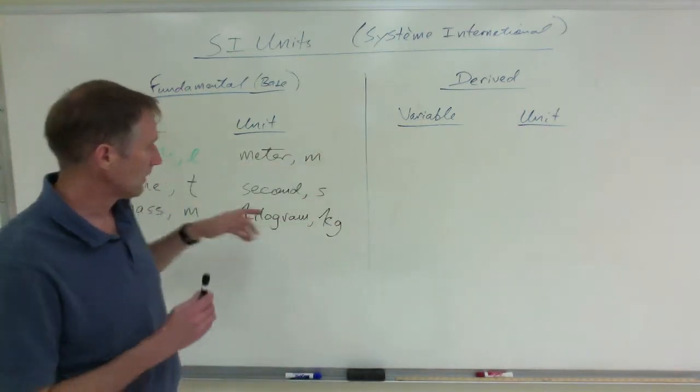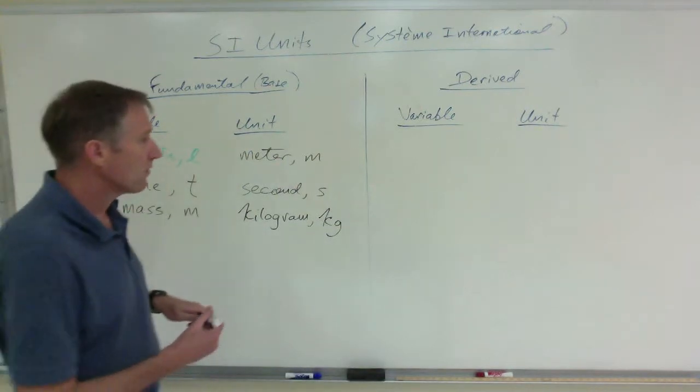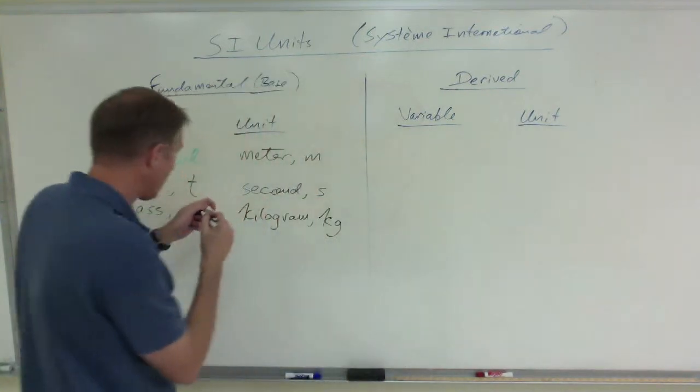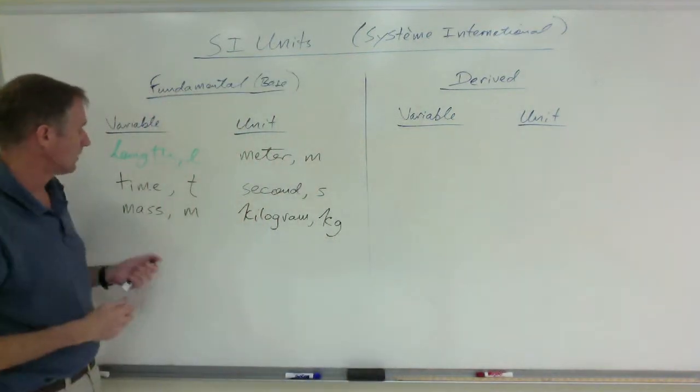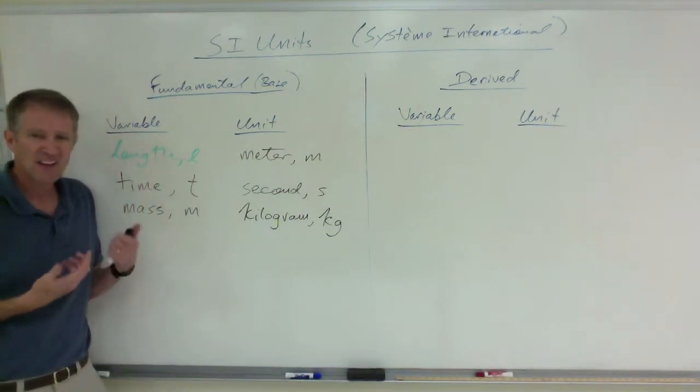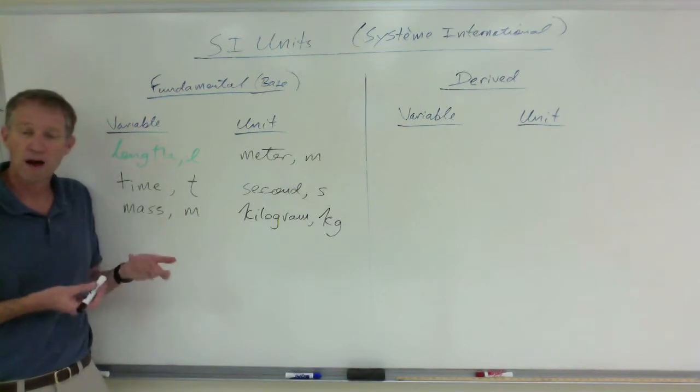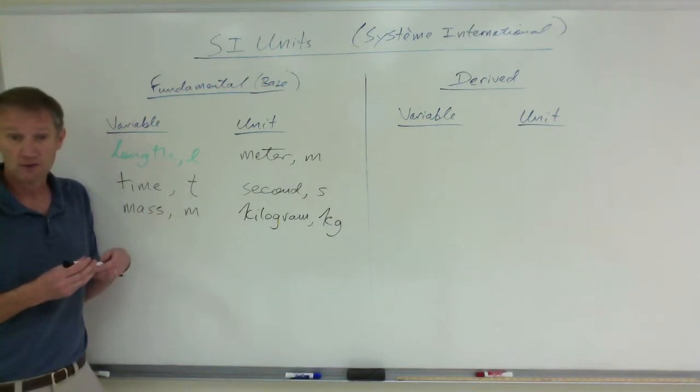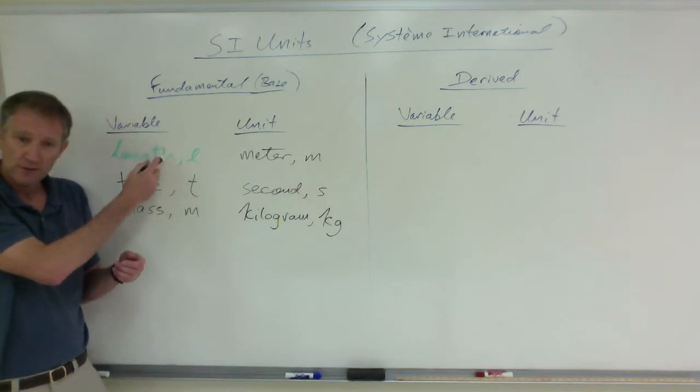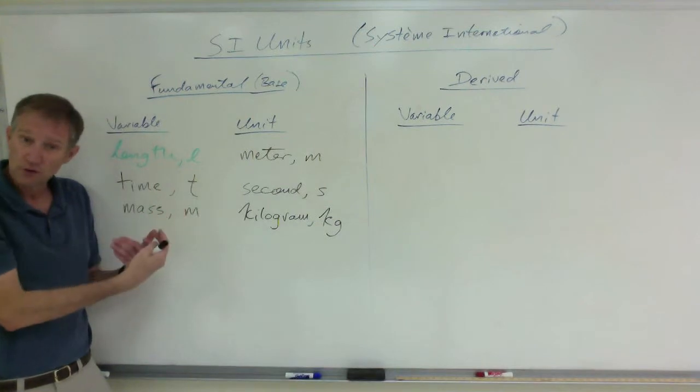Now, let's talk about derived units. When I talk about derived units, then these may make a little more sense. For example, a derived unit, the variable, by the way, don't confuse variable with unit. The variable, length, time, mass. You can measure length. Again, you can measure length in meters, centimeters, millimeters, kilometers, miles, light years, that's a distance. You can measure length, variable length, in all sorts of different things.